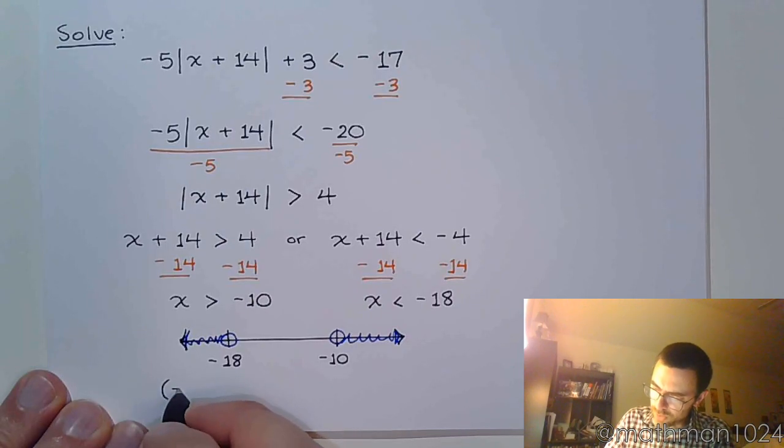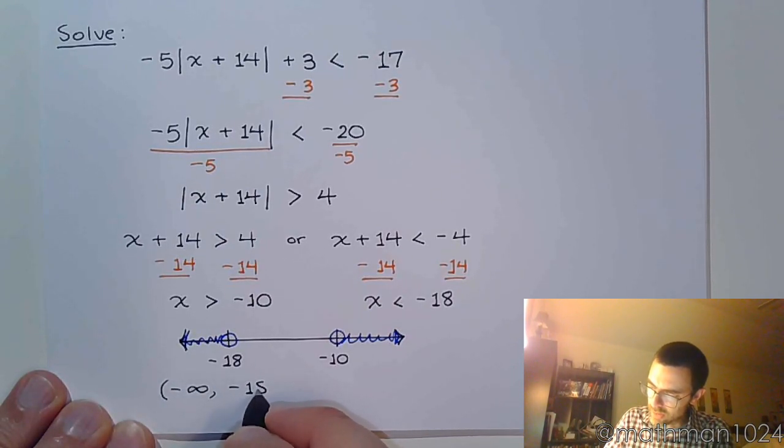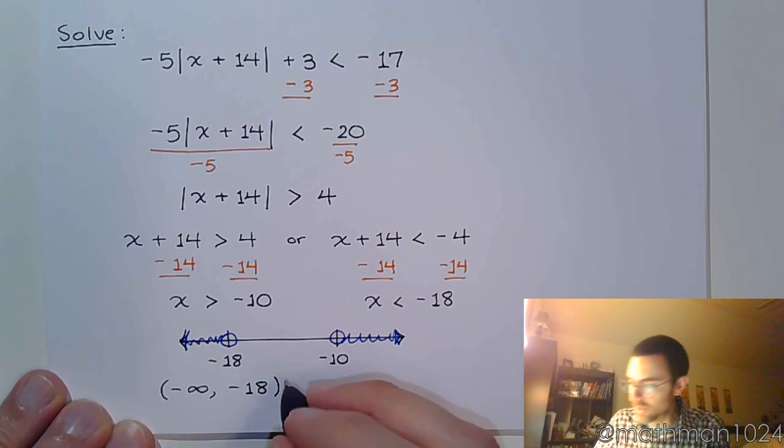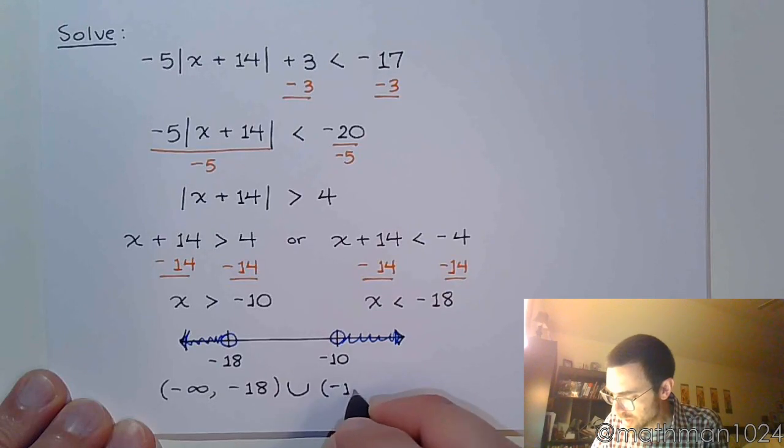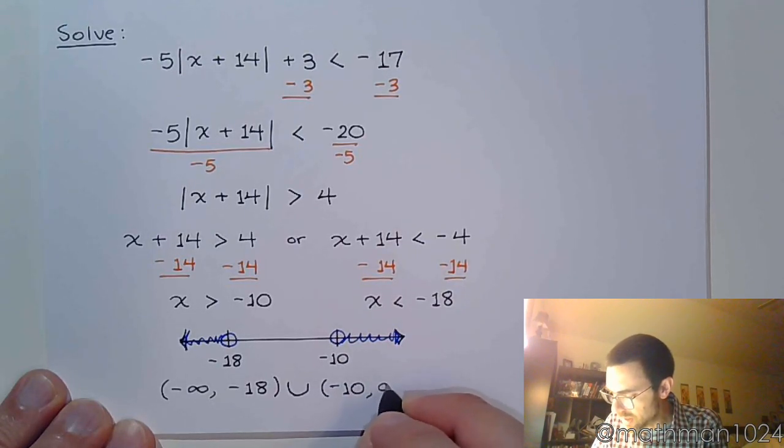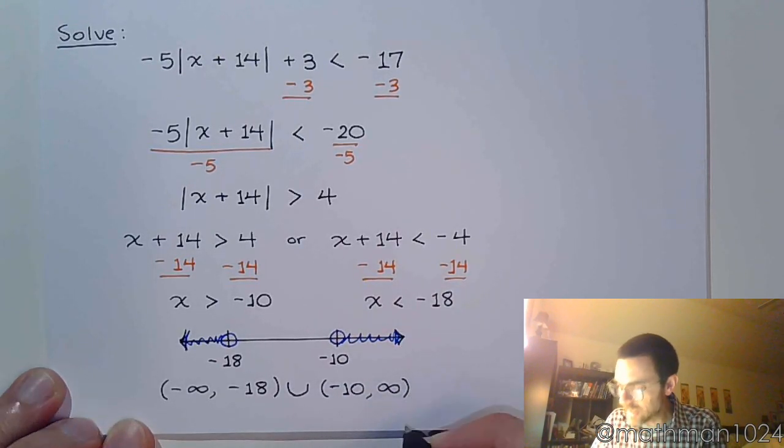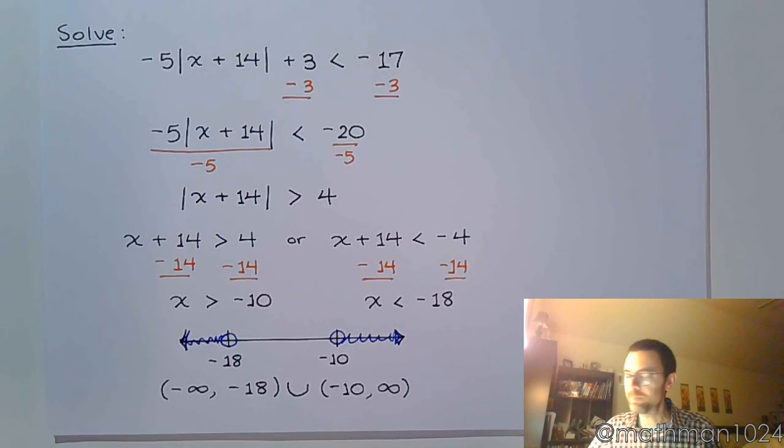The interval notation is going to be from negative infinity to negative 18, parentheses, union, negative 10 to positive infinity. Hopefully that makes sense. We've got a few more examples to look at that are kind of weird, a little bit different. So let's see what happens.